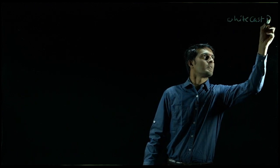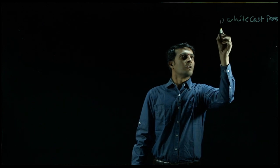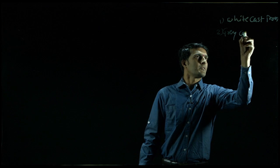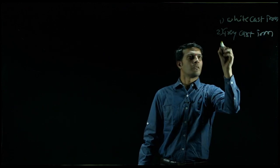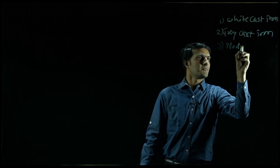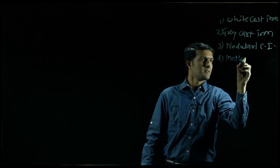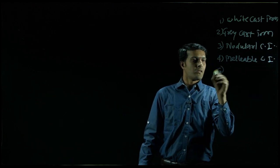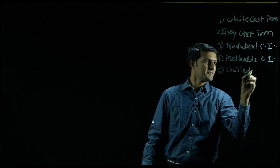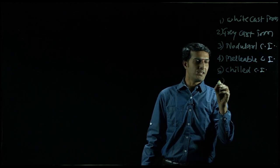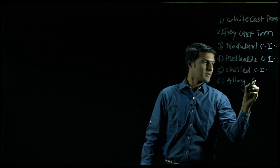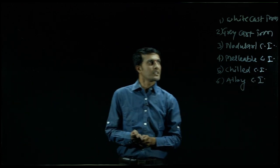On the basis of appearance and microstructures, cast irons are classified as: white cast iron, gray cast iron, nodular cast iron, malleable cast iron, chilled cast iron, and finally alloy cast iron. We will discuss one by one, starting from white cast iron.